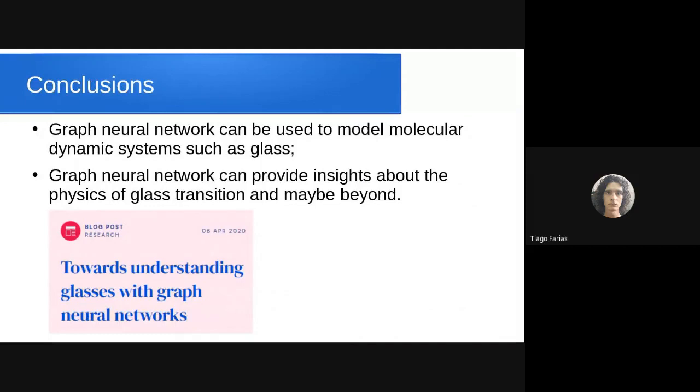In conclusion, graph neural networks can be used to model dynamic systems such as glass, and you can provide insights about physics of glass transitions. At glass transition and low temperatures, there are more correlations between the particles. You can find more information in the blog post about towards understanding glasses with neural networks. That's it, thank you.